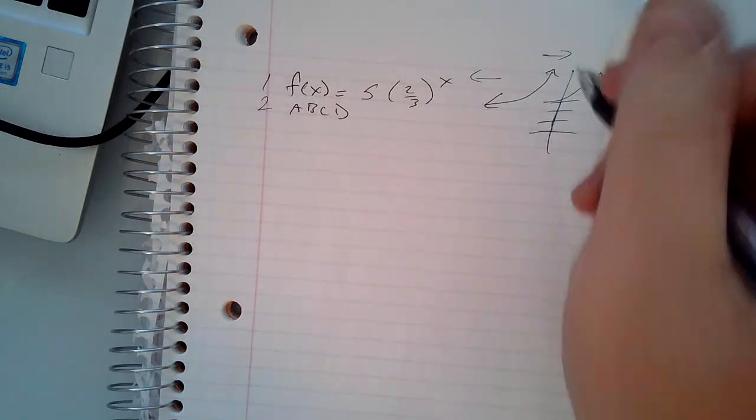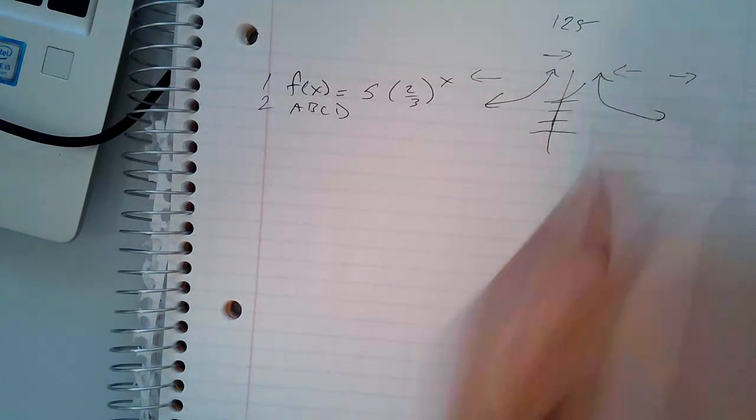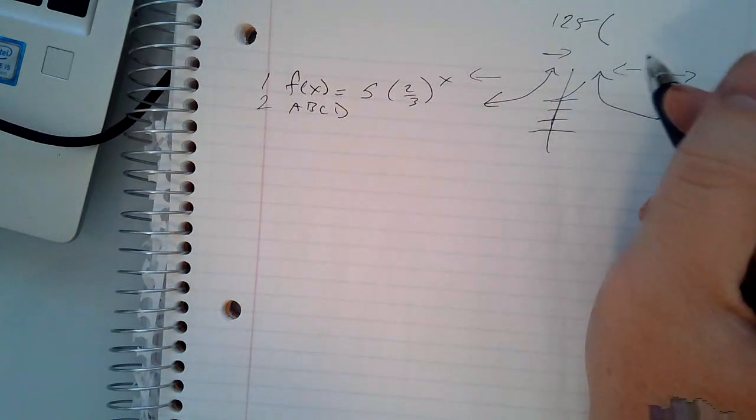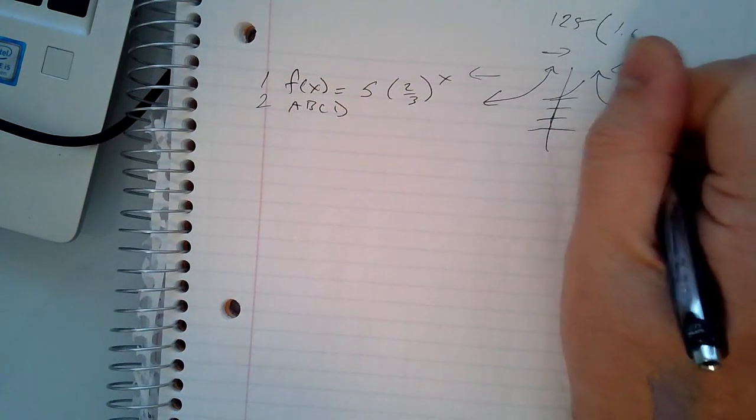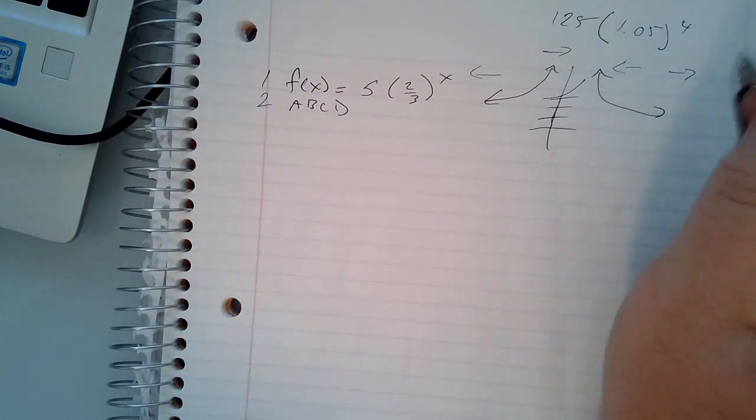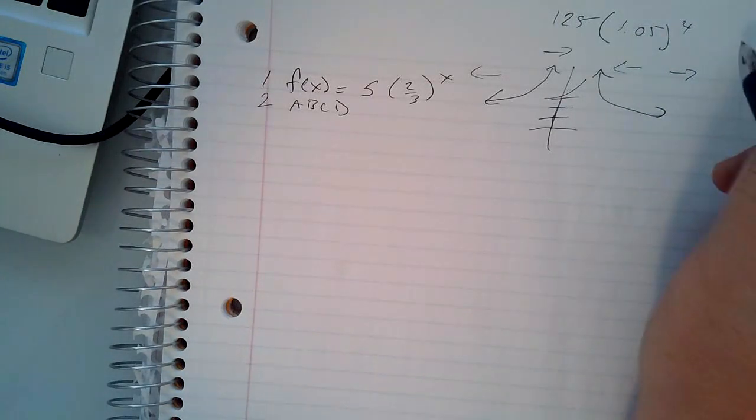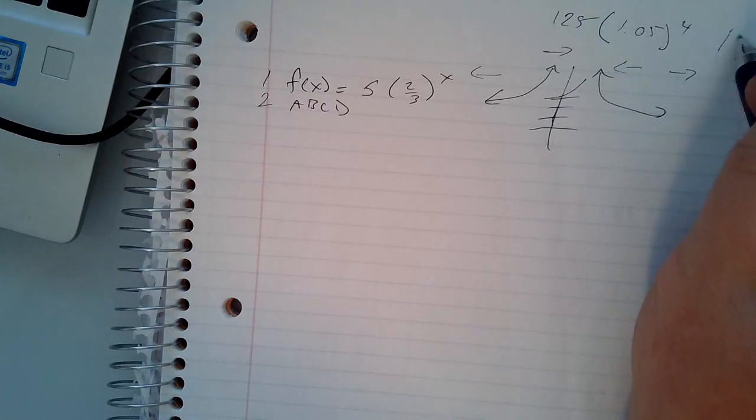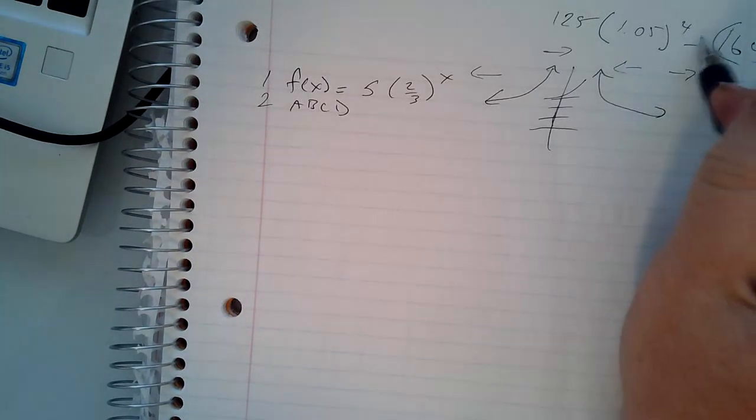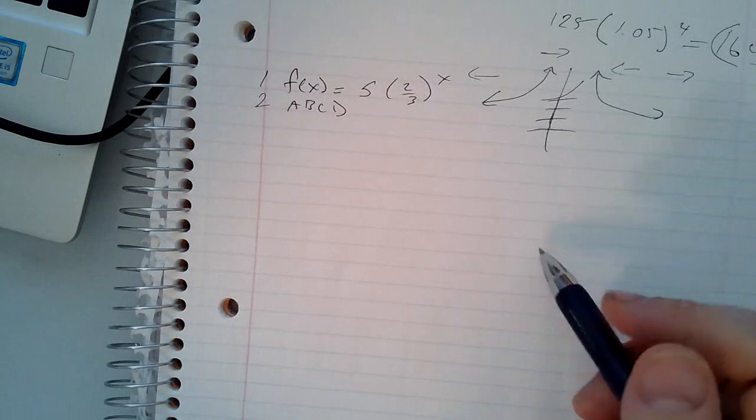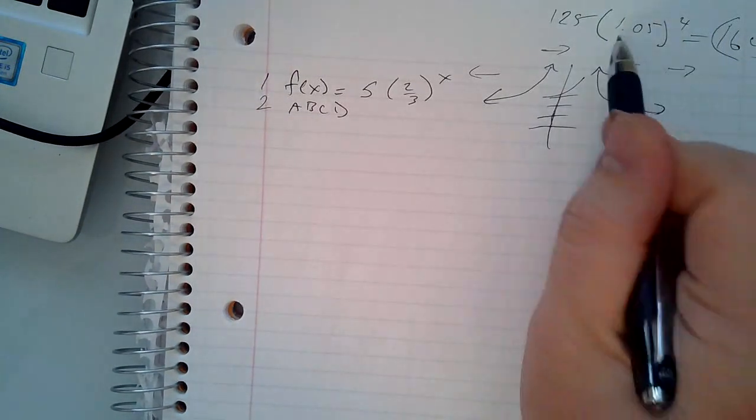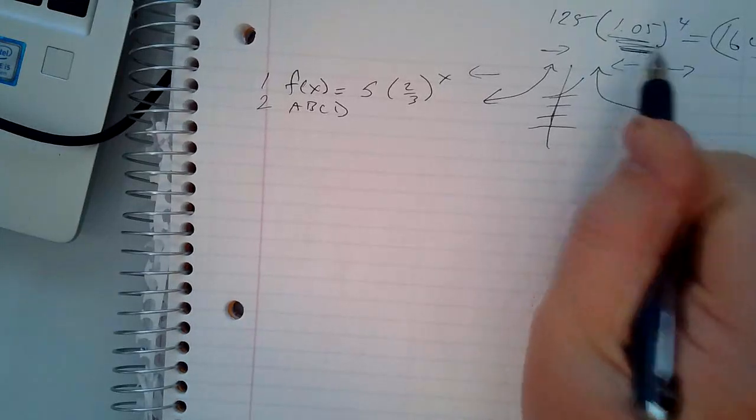So if you take 125-ish as your starting number and you drop these other numbers in there for B, you're going to find out that 1.05 after four years gives you that nice, pretty point, or almost gives you that nice, pretty point of 160. So that tells us that the percent increase each year, it's not 1.05. It's not B.